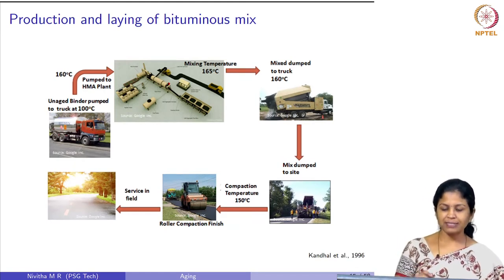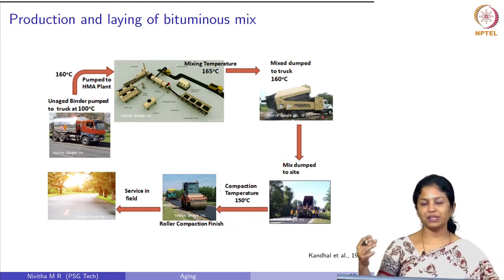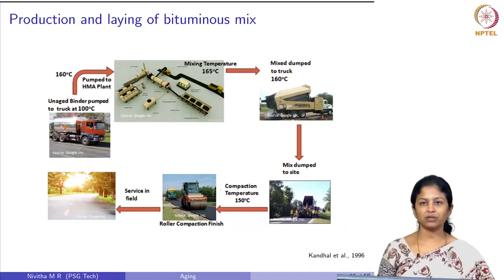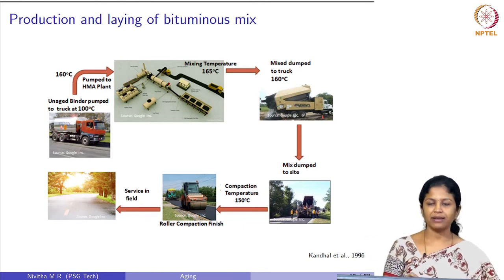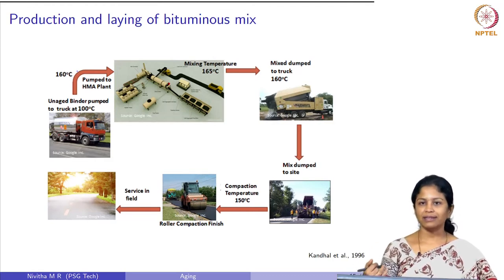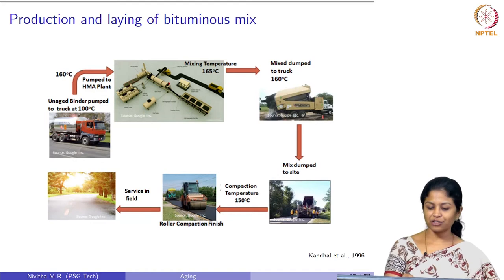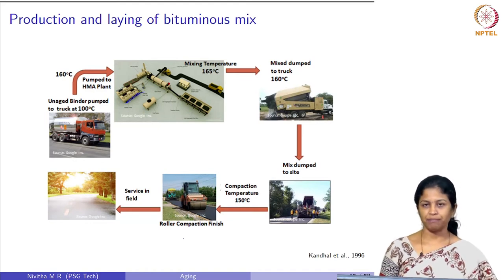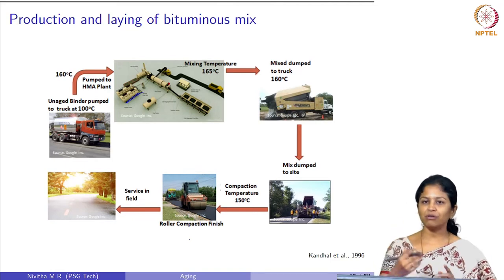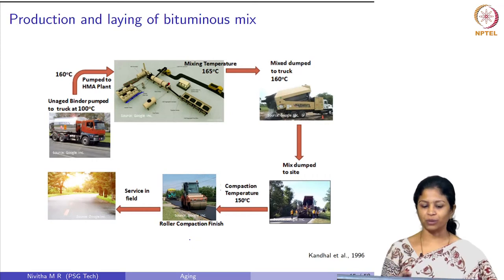The first step is that bitumen is supplied by a refinery, where it is stored in storage tanks. They heat this bitumen, pump it into containers, and transport it to the construction site, where it is unloaded and stored in storage tanks again. Every time we load and unload bitumen, we need to heat it to flowing temperature so that it can be easily pumped in or pumped out.